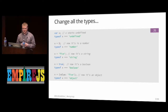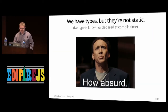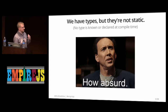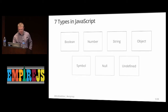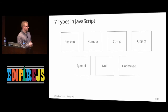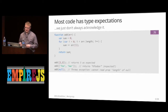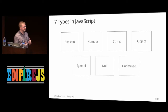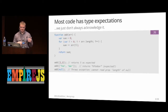We have these types in JavaScript, but we don't know what they are when we compile our code, and we can't be explicit about what we want them to be. We have seven types in JavaScript — boolean, number, string, object, null, undefined, and symbols in ES6. We write our code with these expectations, but variables can be very dynamic in terms of their type.